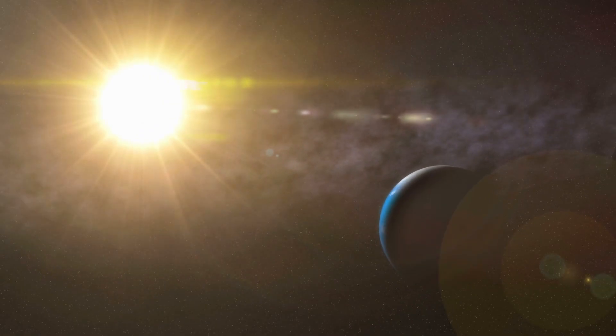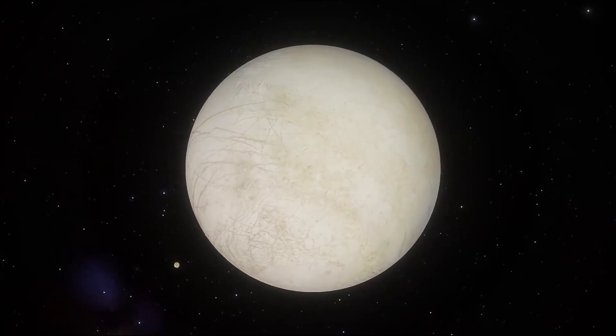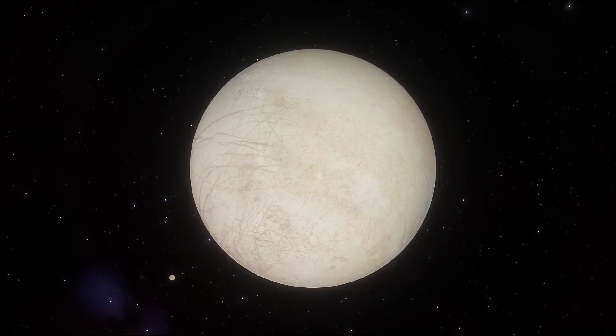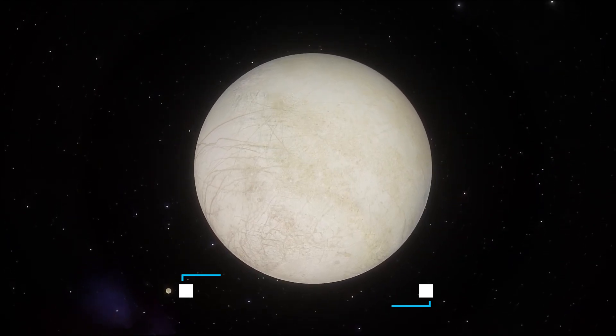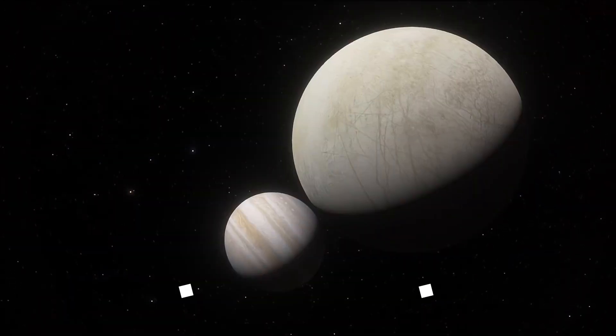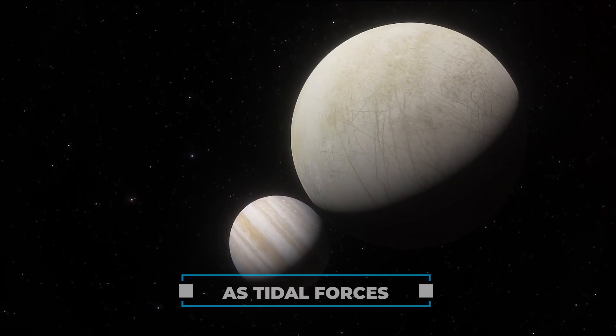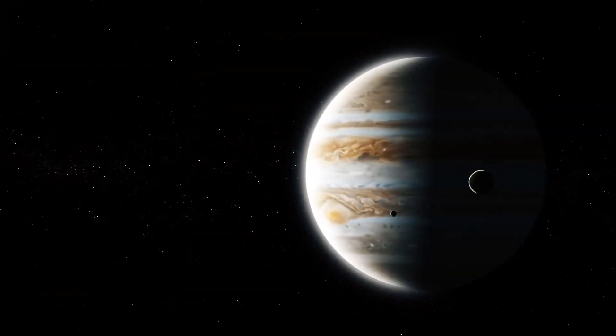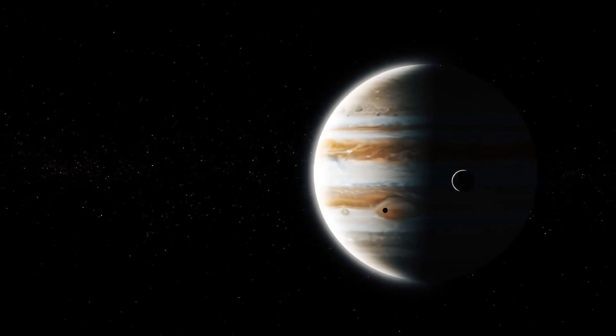Instead of relying on the Sun for warmth and energy, Europa has a different source of heat that keeps it from turning into an icy, lifeless world. This source is known as tidal forces, which are essentially the result of a cosmic tug-of-war between Jupiter and Europa.